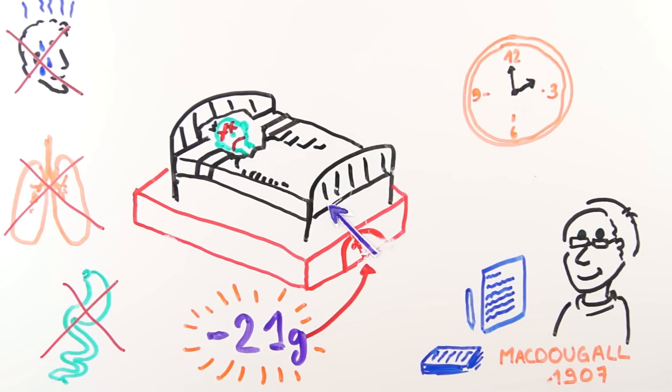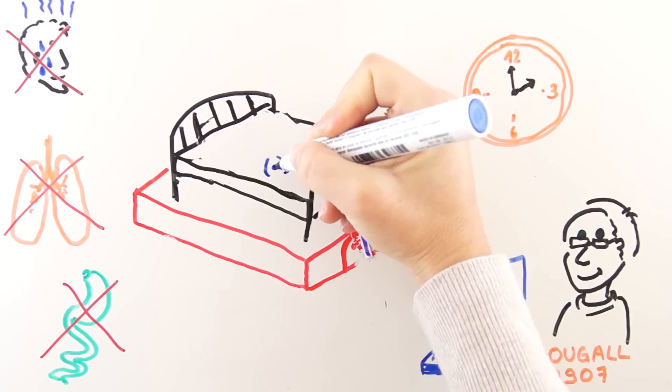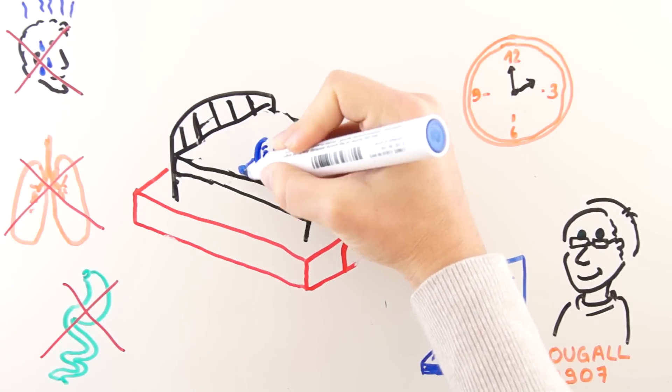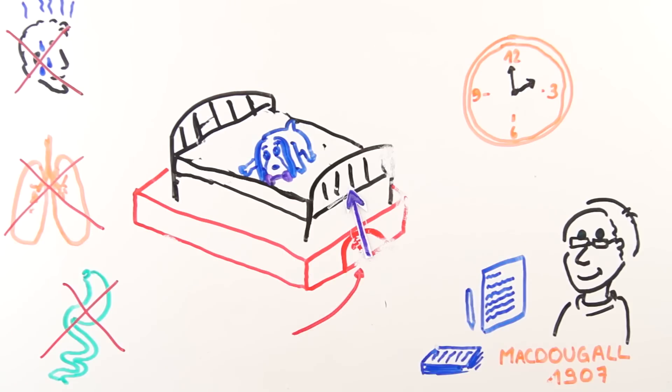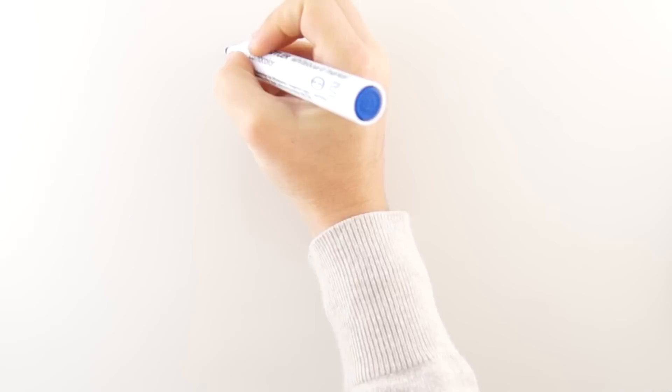The experiment was reproduced on 15 dogs. MacDougall assumed they had no soul. This time, no loss in weight was observed. So, the weight of the soul, scientifically proven?